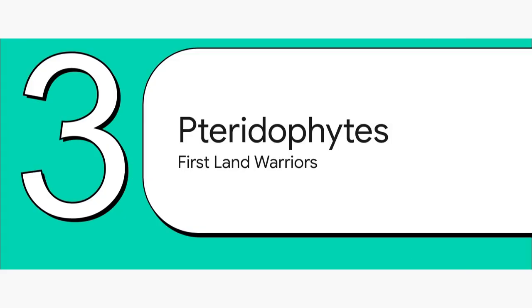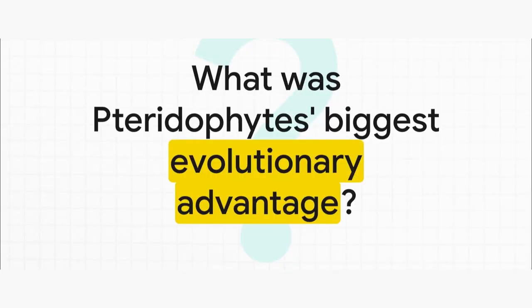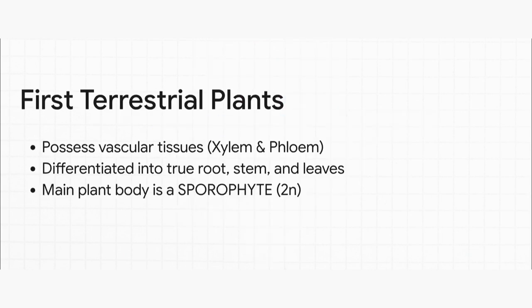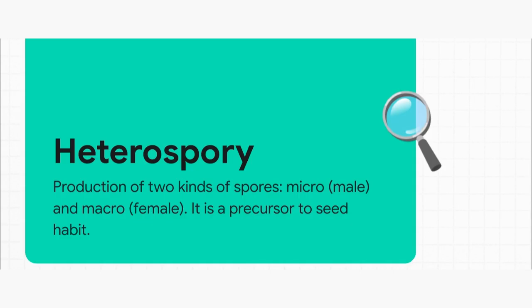Let's move on to the next major stage in evolution. We're talking about the first true land warriors. Section 3: pteridophytes. So what was their secret weapon? What did pteridophytes have that bryophytes didn't? This was the game changer. For the first time ever in the plant kingdom, we see vascular tissues — xylem and phloem. This is like the plant's plumbing system. Because of this, they could also develop true roots, stems, and leaves. And now for the major NEET alert: from this point on, the main plant body is the sporophyte. The diploid 2N stage is now dominant. That's a massive shift in the story.